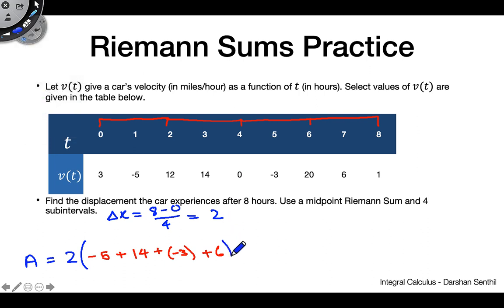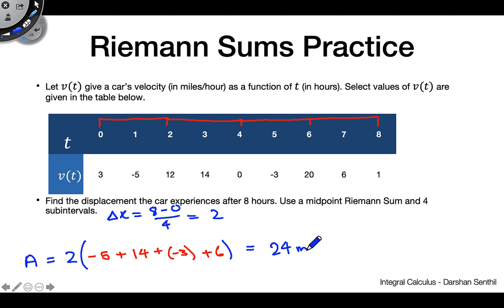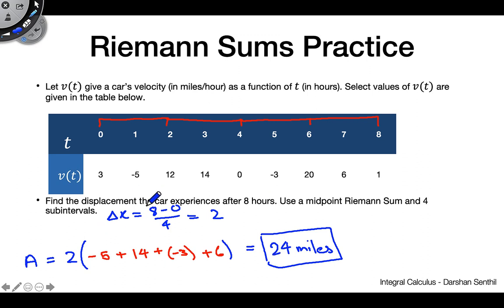Summing the velocities: −5 + 14 − 3 + 6. First, −5 + 6 = −2 (sorry, −5 + 14 = 9... let's follow the video's arithmetic: −5 + (−3) + 14 + 6 = 12). Then 2 × 12 = 24. Our final answer is 24 miles of displacement.